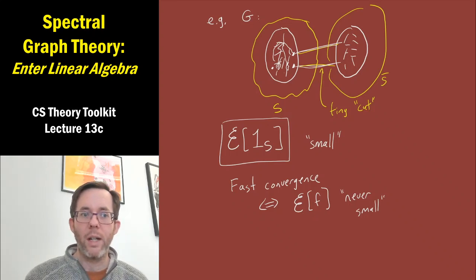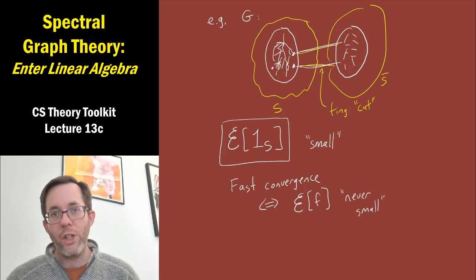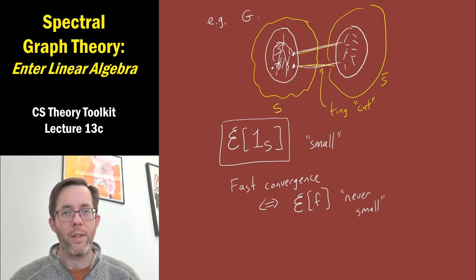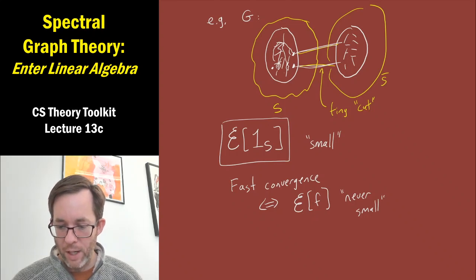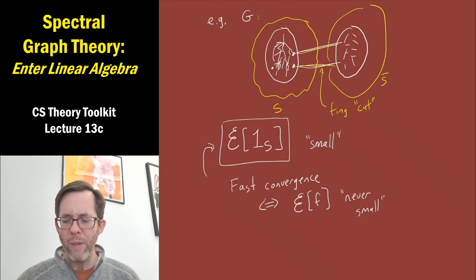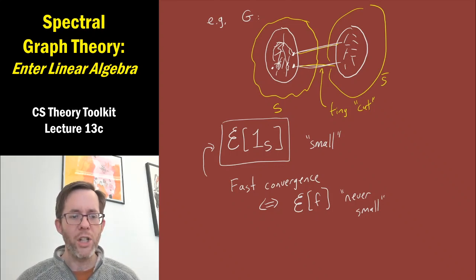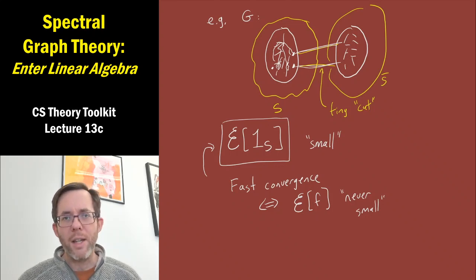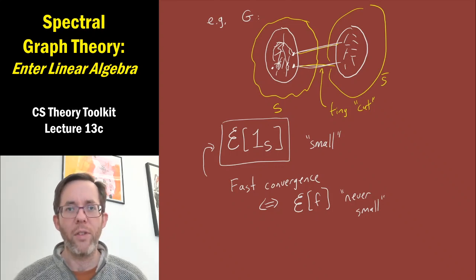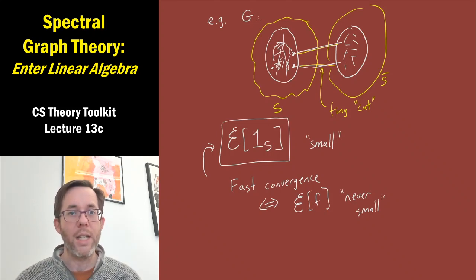Let's continue. We were discussing the fact that if you are interested in how fast a random walk mixes on a graph, then it seems you may need to study this important quantity, the quadratic form for the graph. We want to understand if this is small or large, and we'll have to get into some actual calculational detail. Linear algebra really starts to enter the picture here.